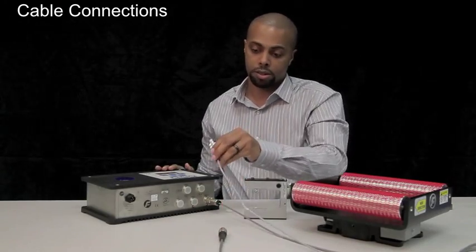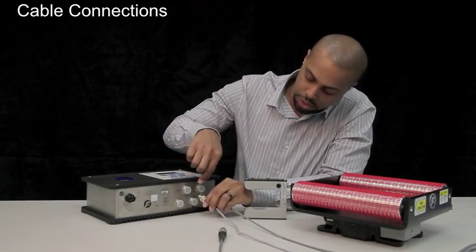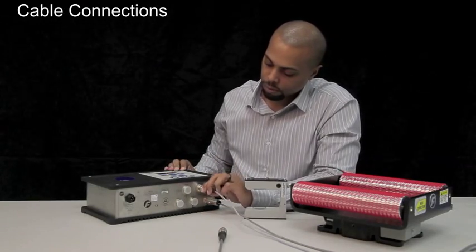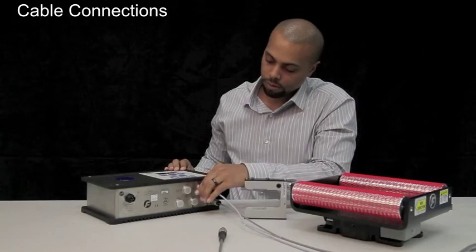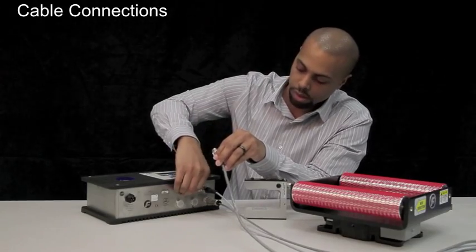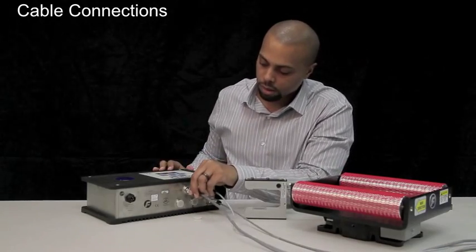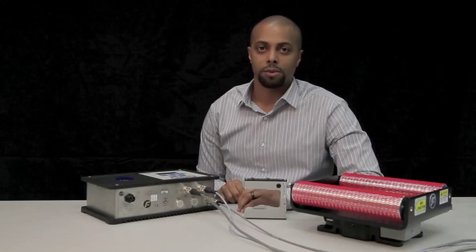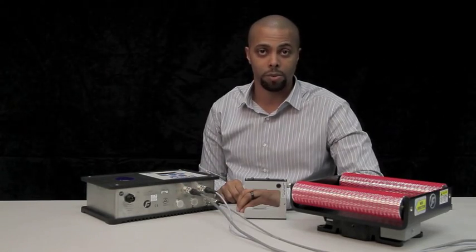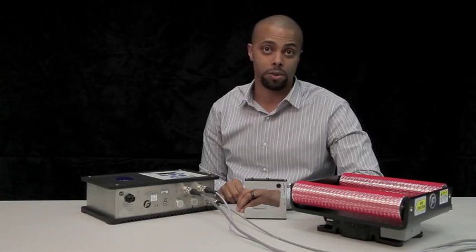We'll connect our servo center sensor to port X2, and the offset pivot guide will connect to drive 1 on port X1. For your specific cable connections, be sure to reference your system block diagram which is located on your CD manual.